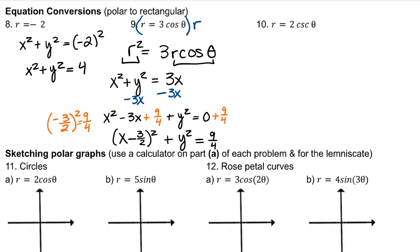I'm going to complete the square as far as the x's are concerned, so that I can write x as a quantity squared. Remember, this is what goes here. Alright, this is a circle centered at 3 halves comma 0 with a radius of 3 halves. For r equals 2 cosecant theta, I'm going to rewrite cosecant theta as 1 over sine theta. If I multiply both sides by sine theta, oh my goodness, r sine theta is y.